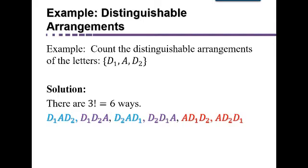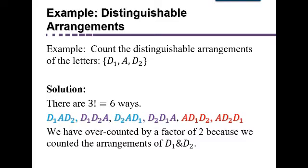So if they were distinguishable like that, we just saw that there would be three, since there's three objects we would be arranging, the three distinguishable letters, then there would be three factorial or six ways to arrange the letters. And they're listed here. We have D1, A, D2, D1, D2, A, and so on. But really, we can't distinguish between the D1 and the D2.